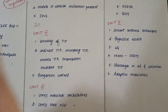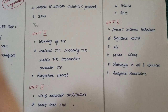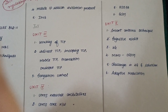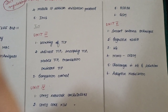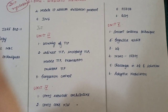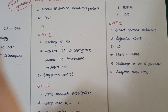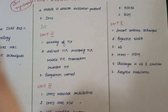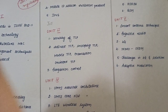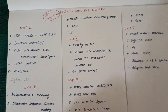Unit 5 topics: smart antenna techniques, cognitive radio, 4G features and technologies, MIMO-based OFDM (Orthogonal Frequency Division Multiplexing), challenges in 4G and proposed solutions, and adaptive modulation. These topics are common to both 2013 and 2017 regulations.